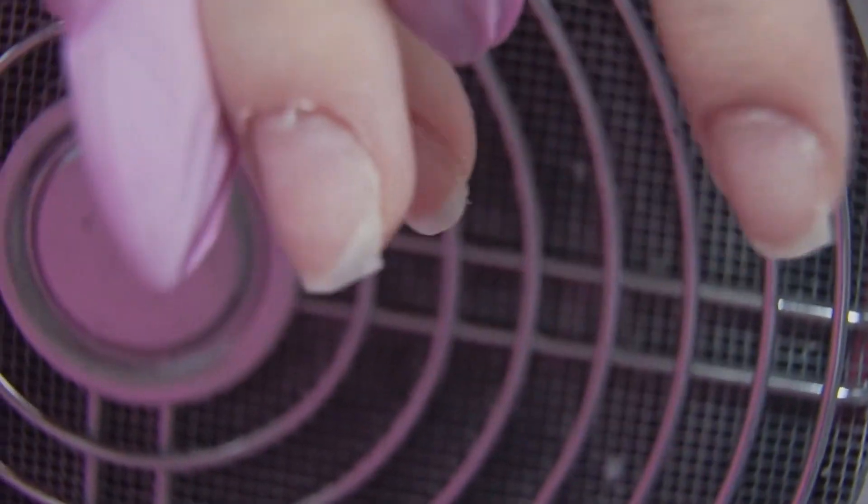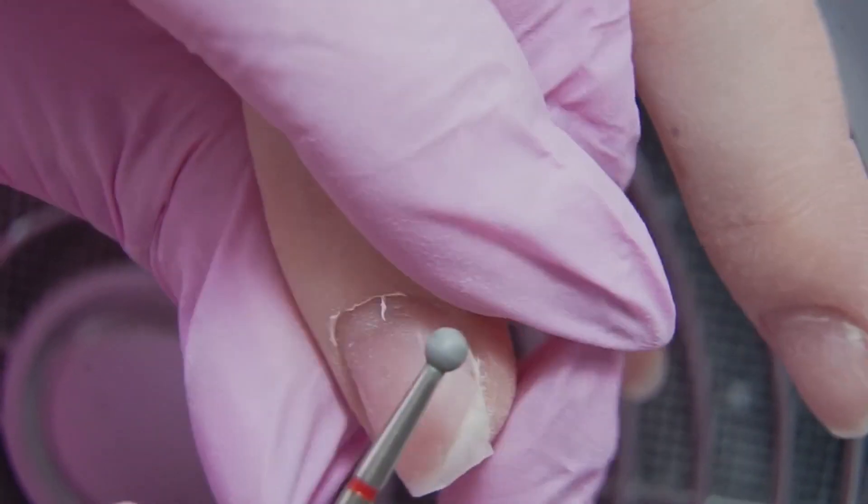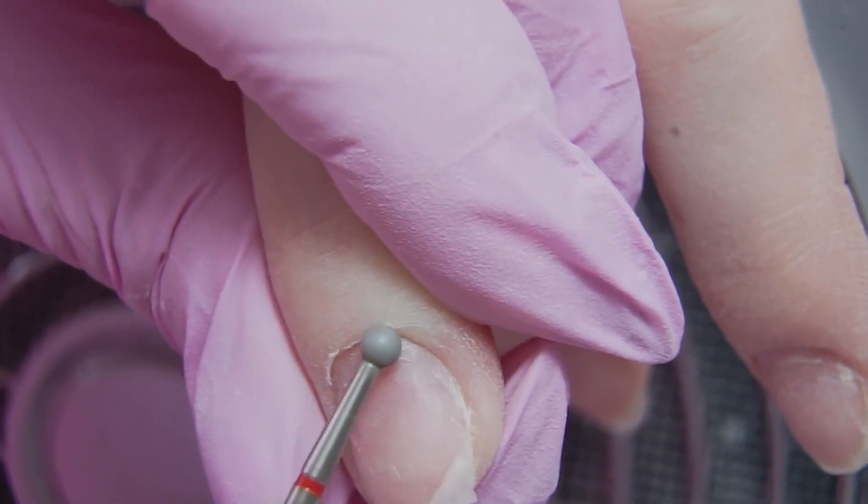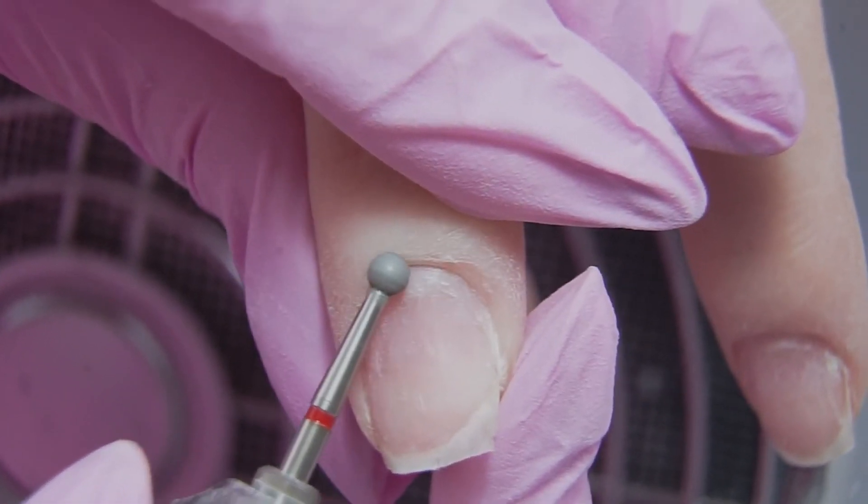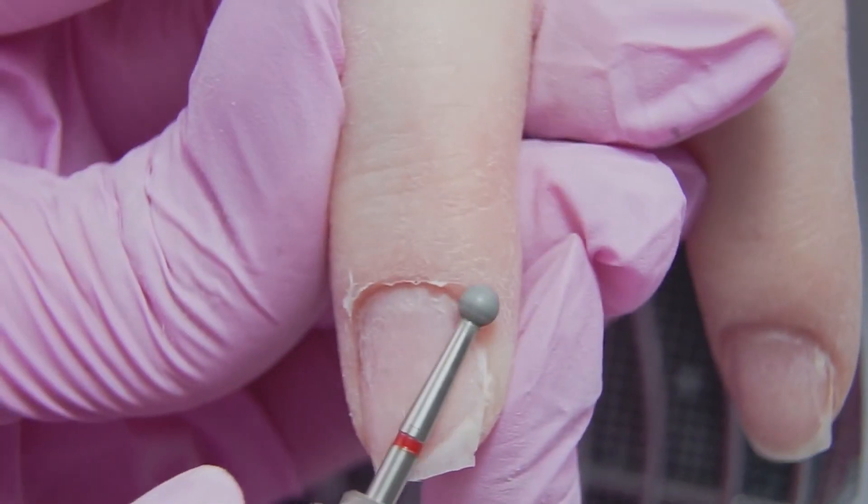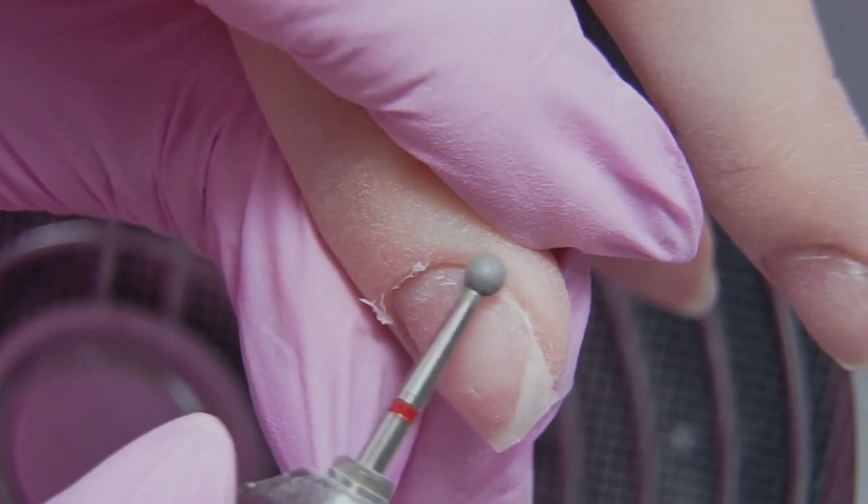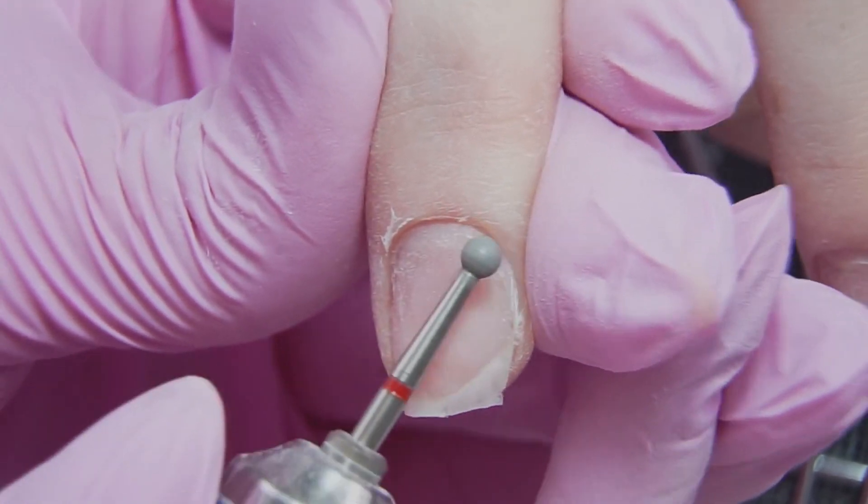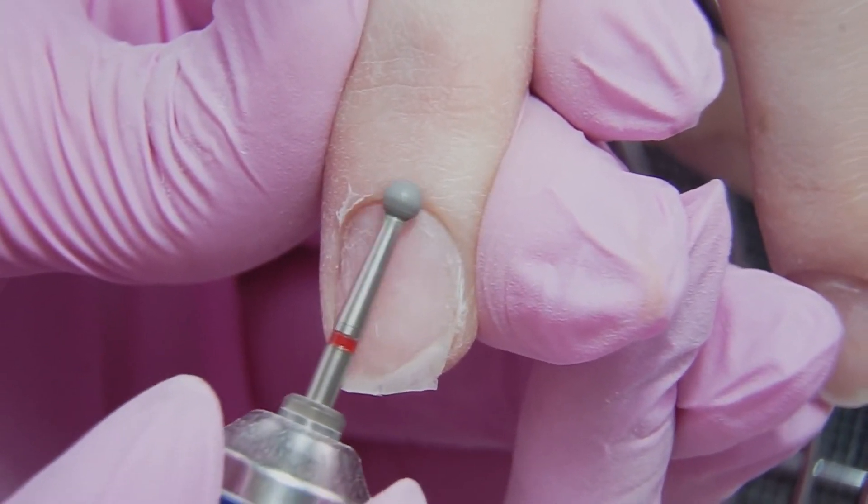During the first pass, I lift up the cuticle even more and on the second pass, I cut it off. I keep changing the direction of rotation, the bit moves like the clock hands. Don't file on one place for too long, so the skin does not heat up. Make sure your client does not feel pain. Skin overfiling can also cause hangnails to appear very quickly, even on the second or the third day after the manicure.